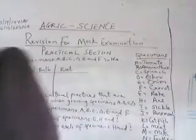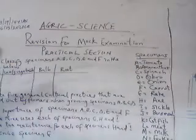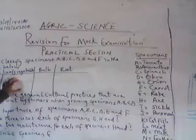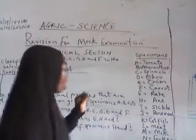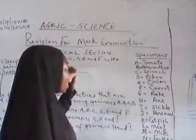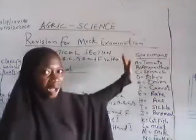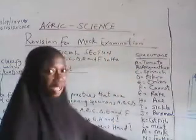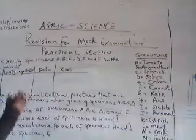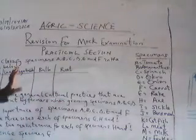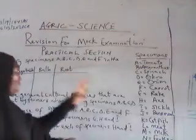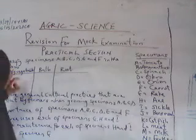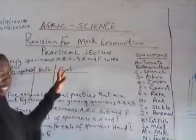The first question in the practical section is: classify specimens A, B, C, D, E, and F in the table below. Those specimens I presented during that practical section are the ones I have highlighted on the board here, which runs from A to N. We are asked in question 1 to classify specimens A to F into the fruit class, the leafy vegetable, the bulb, and the root.